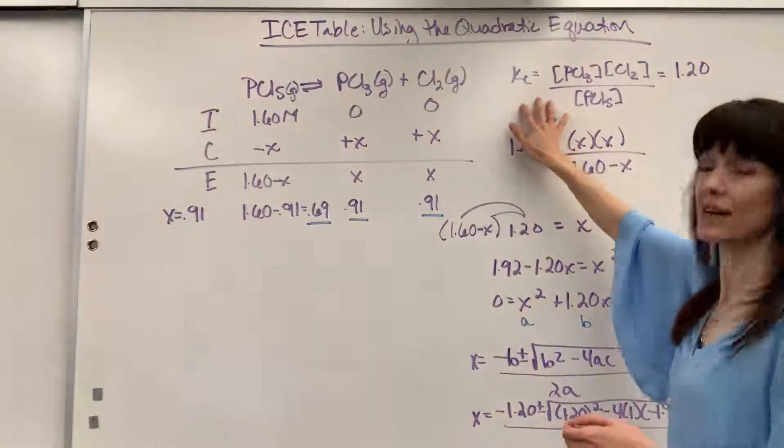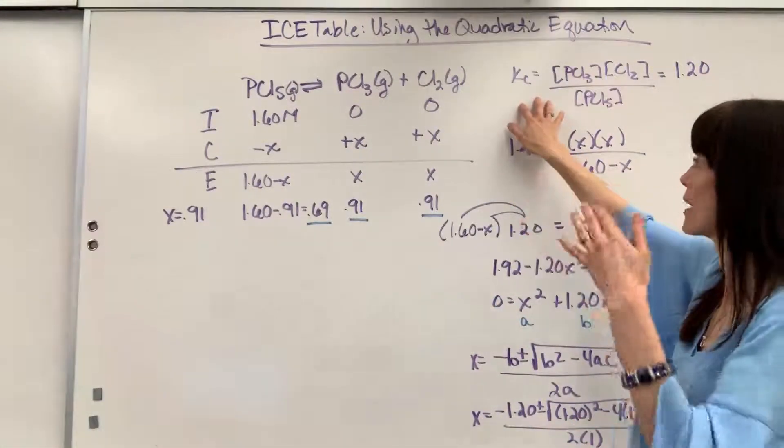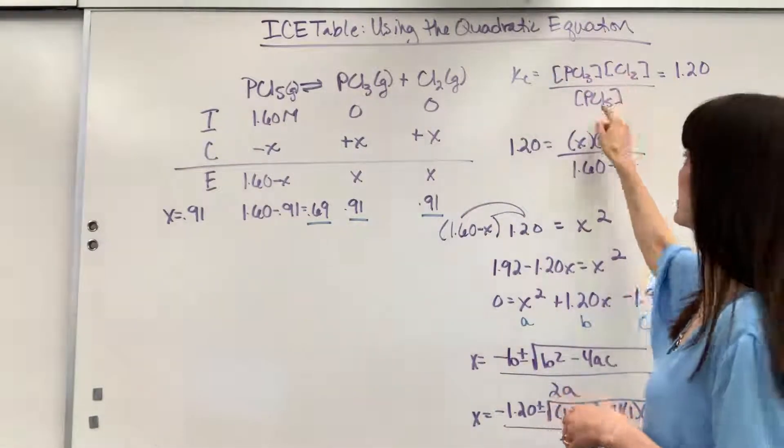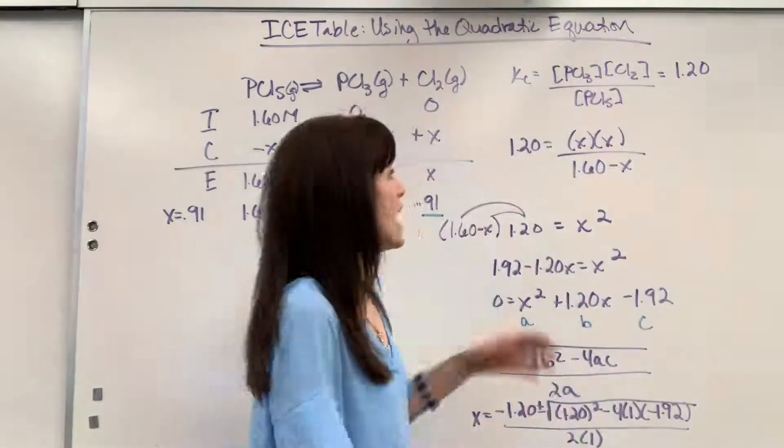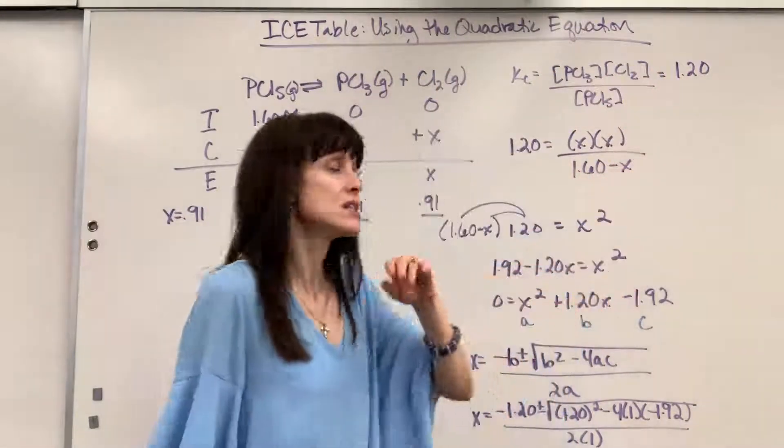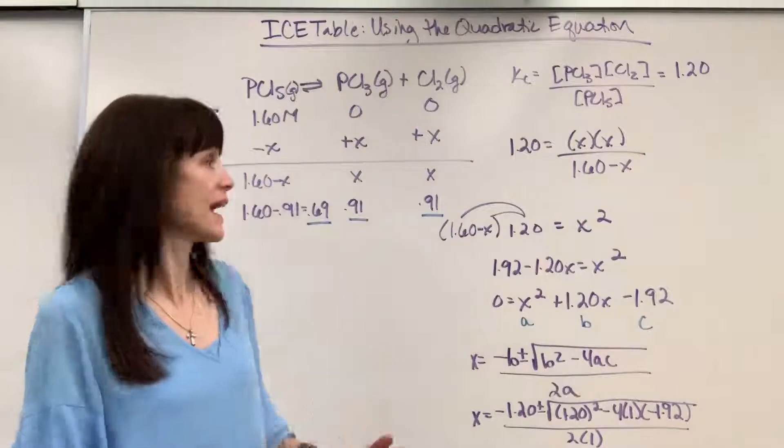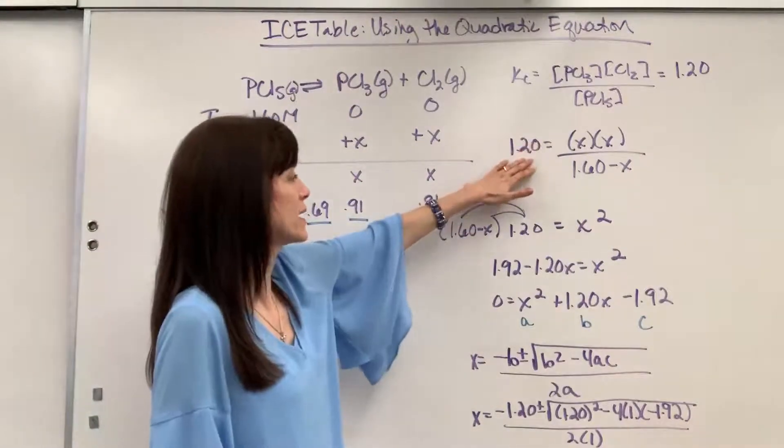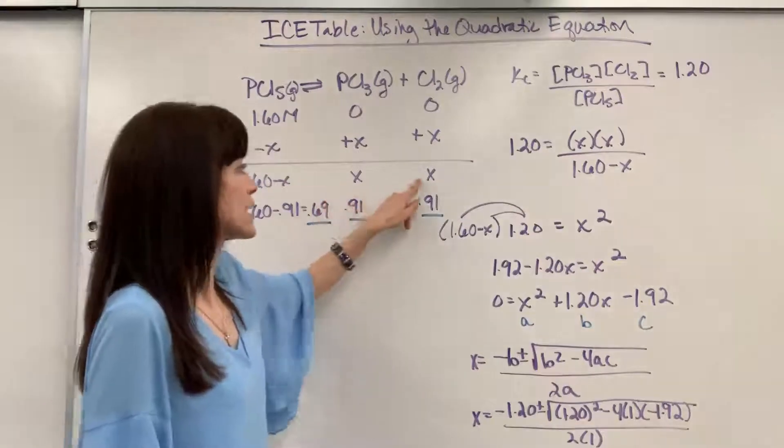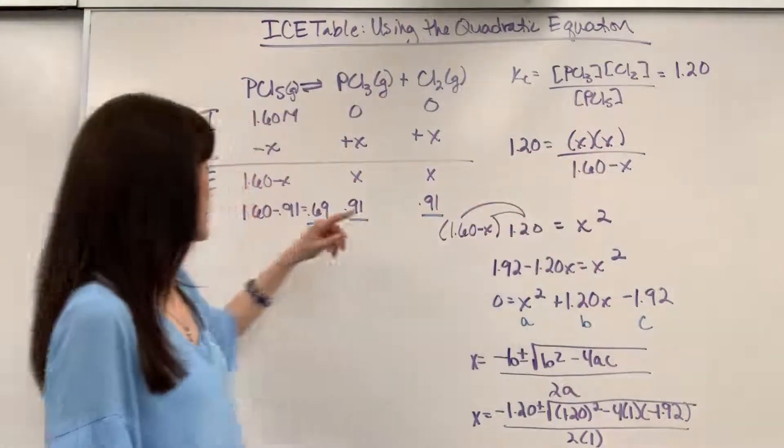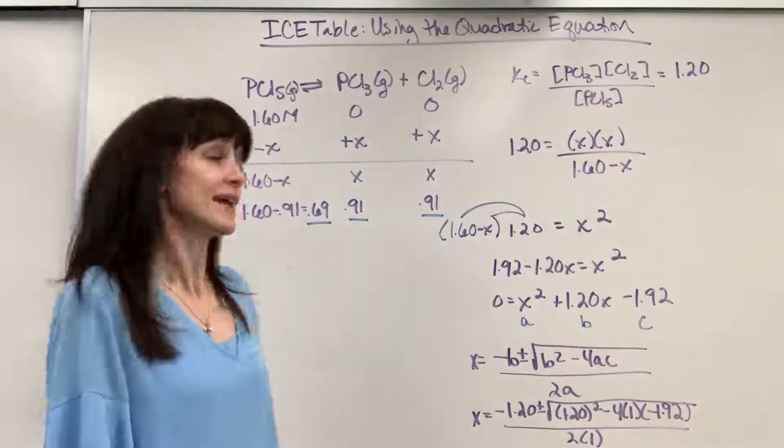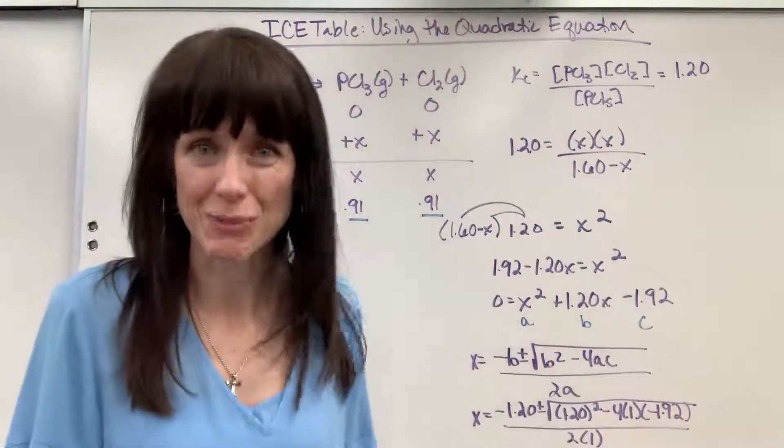So we plug into our equilibrium expression. Remember, products over reactants. So it's PCl3 times Cl2 divided by the PCl5. And again, this equals that equilibrium constant, which is 1.2. So if we substitute in what we have, there's my Kc, my equilibrium constant 1.2, equals products X times X divided by the reactant. That PCl5 is 1.6 minus X. And now we have a pretty good algebra problem.